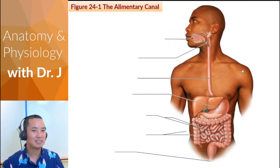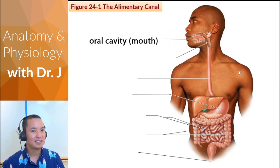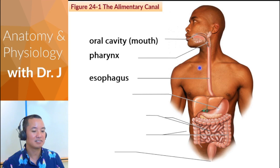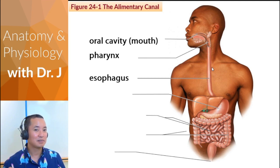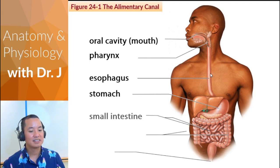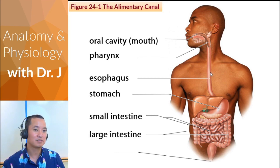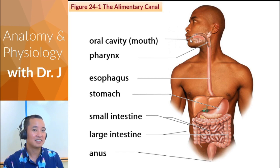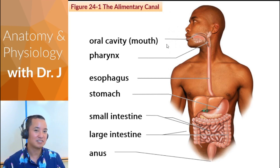Going from start to finish: food enters via the mouth — the oral cavity — then through the pharynx, which is a common path shared with the respiratory tract. But food should go down the esophagus, not the trachea. From the esophagus it goes to the stomach, then the small intestine, then the large intestine, and finally exits via the anus. Your GI tract is essentially a long tube that bulges and contours in different ways, with a clear start and finish.